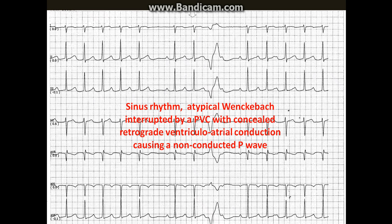So this case is atypical Wenckebach interrupted by a PVC with concealed retrograde ventriculo-atrial conduction causing an unconducted P wave. I hope you liked the case.